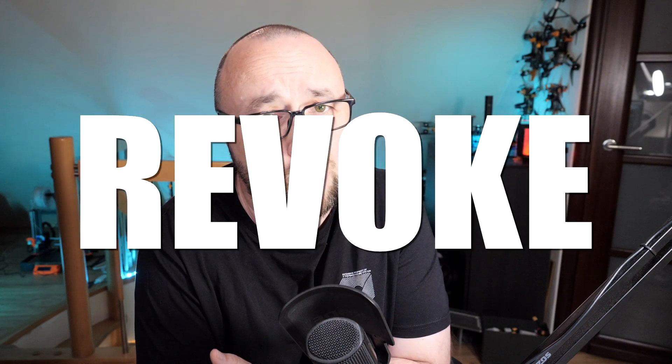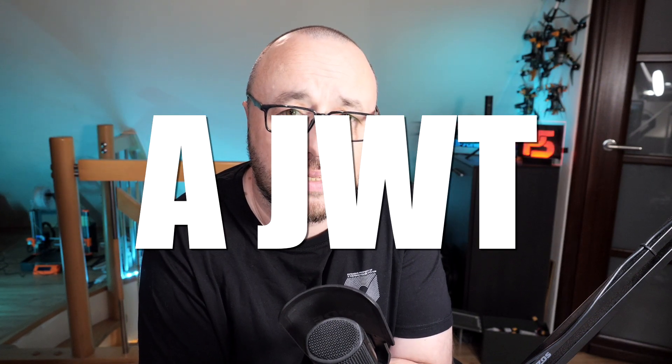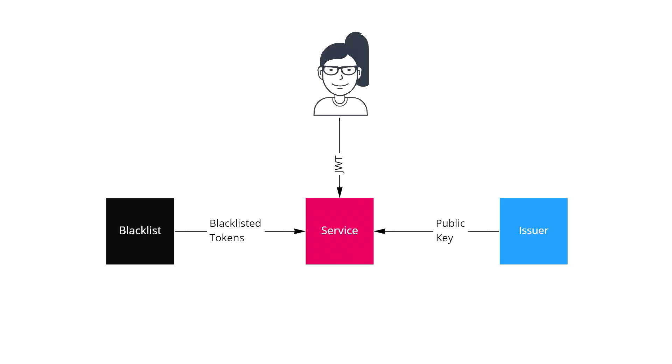I have bad news for you. You can't revoke a JWT token — this is just not how it works. You can build your own blacklist for the tokens, meaning every time you'd like to revoke a token, you put it into the list, and every time the service receives a token, it checks whether it's blacklisted. Luckily, you don't have to do that, because with JWTs you grant access in a slightly different way.